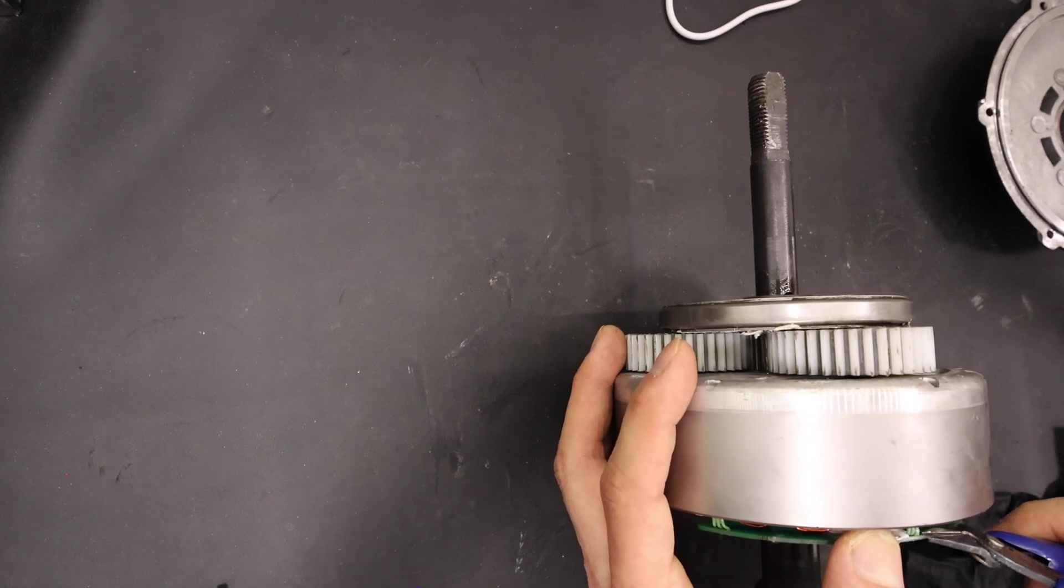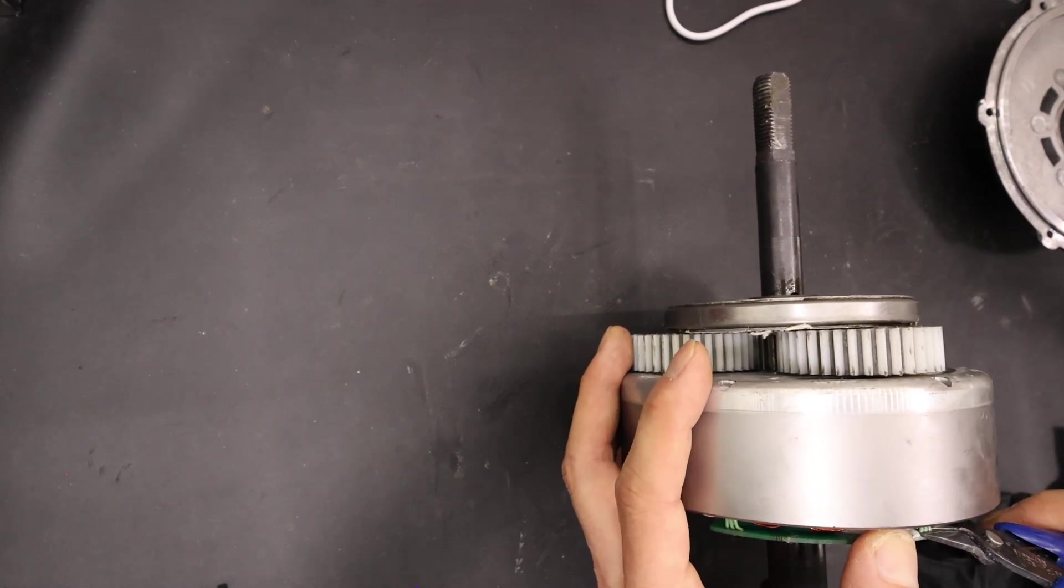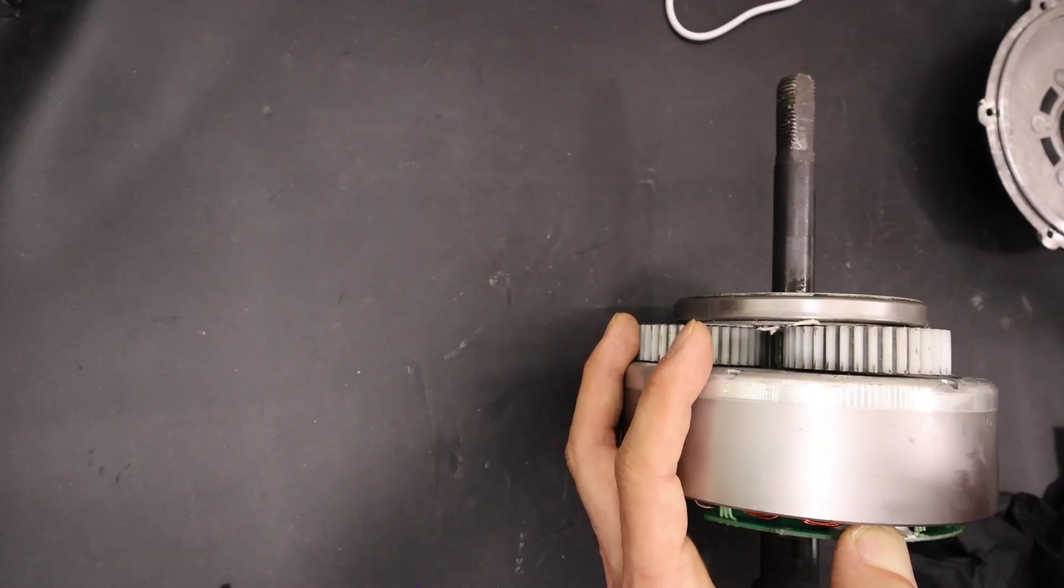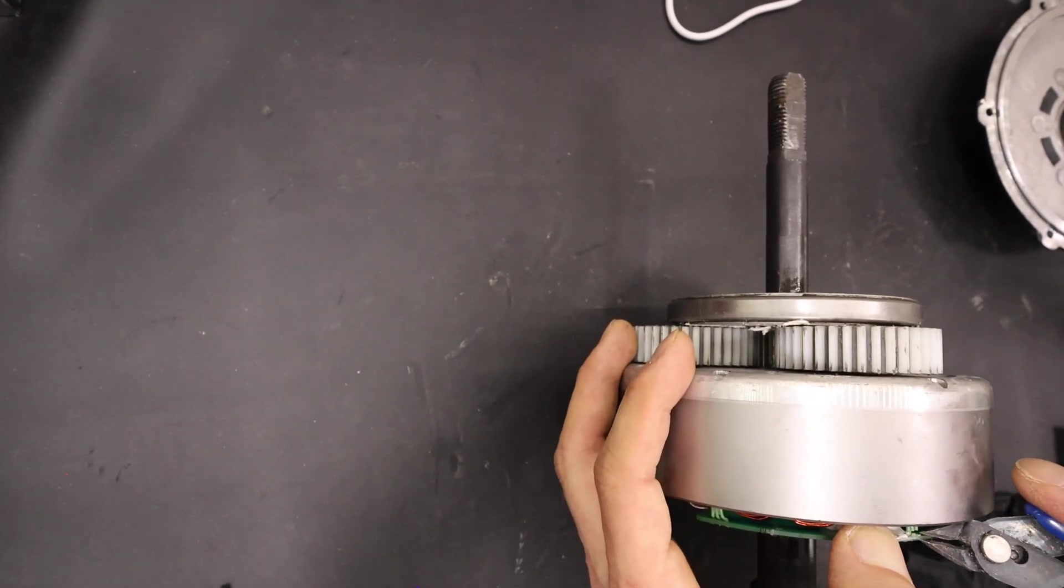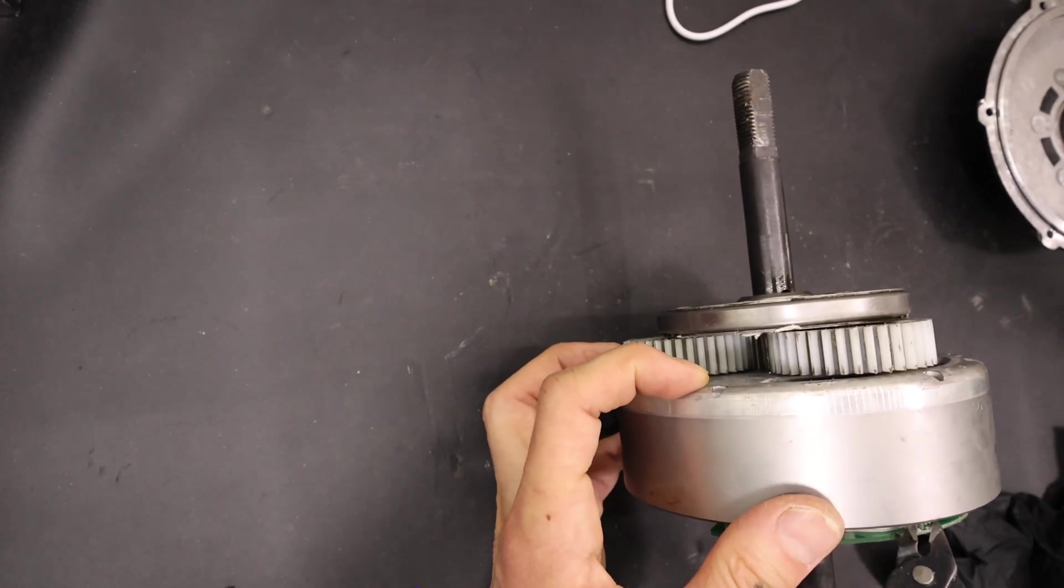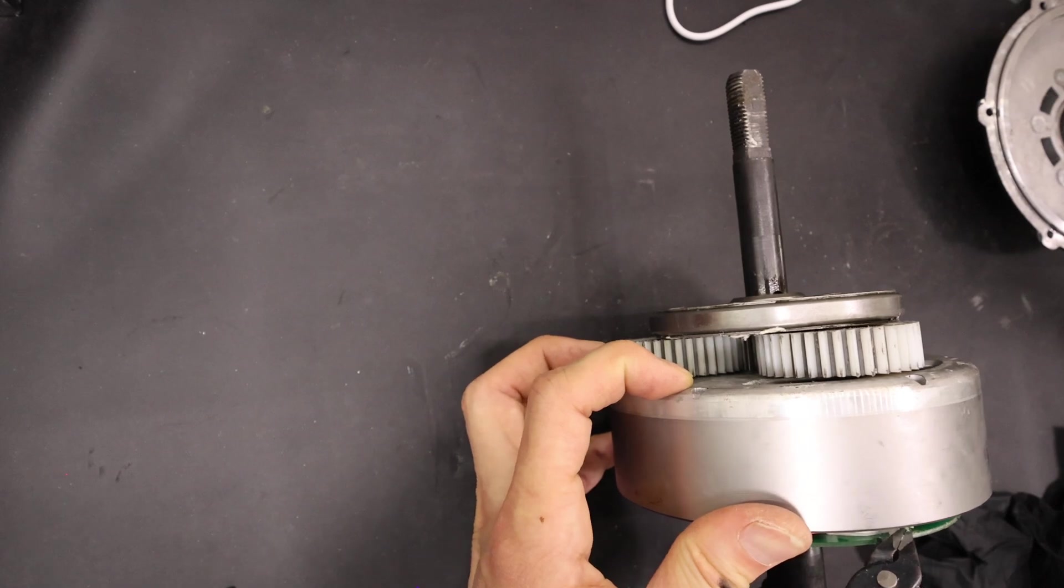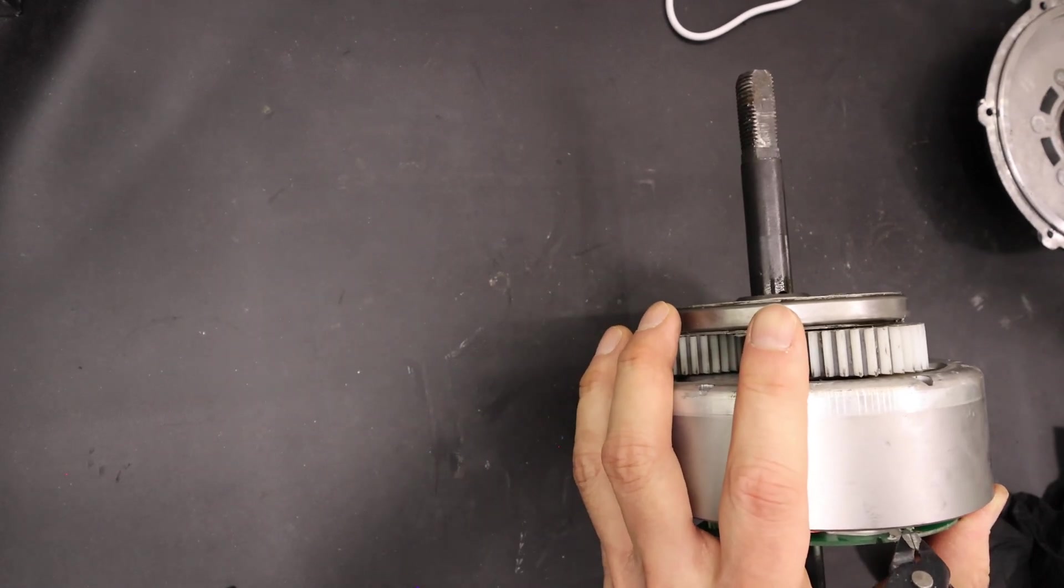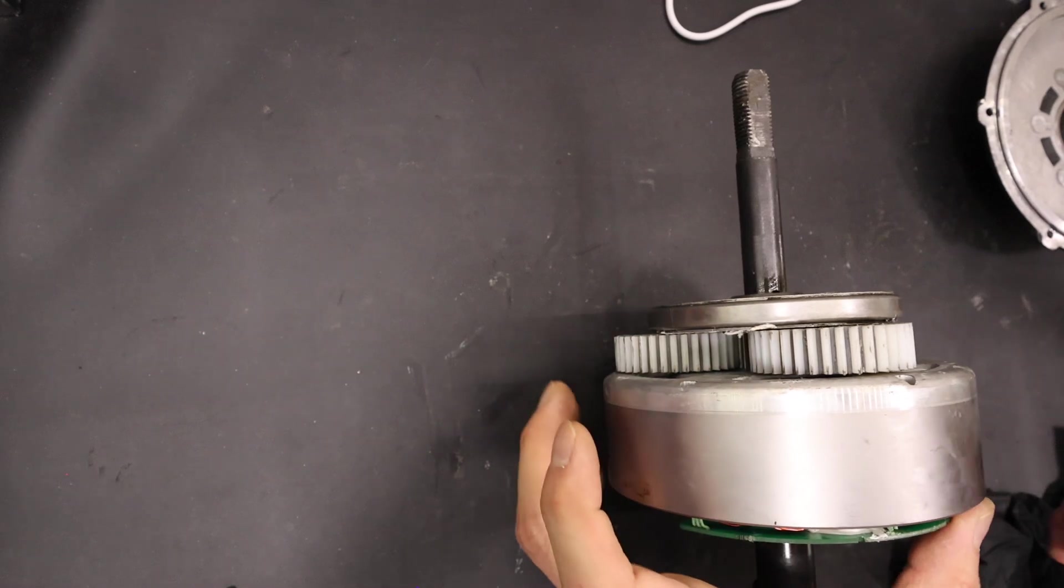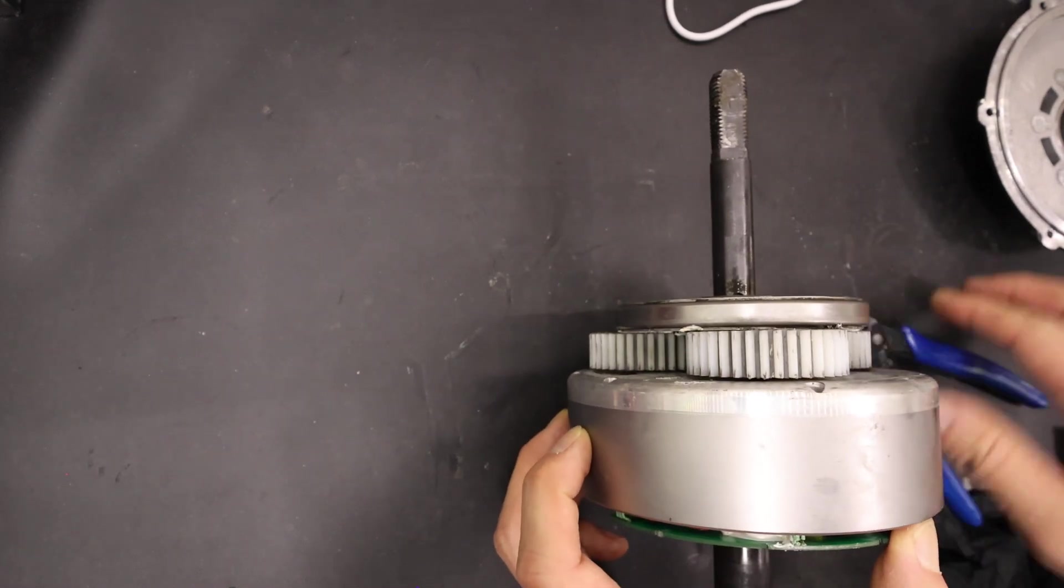But what's funny is the new hall sensors actually didn't test like that. I had to actually hook up five volts and detect the voltage when I passed the magnet around it. But ended up being this middle one. So I don't know if that test is good just for this brand of hall sensors, but it didn't work on the new ones, but the new ones were still good.